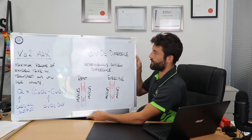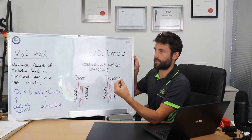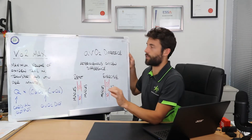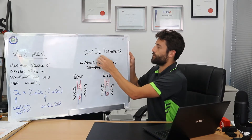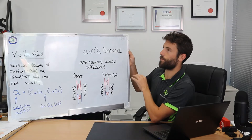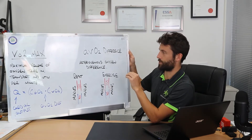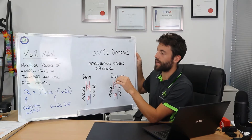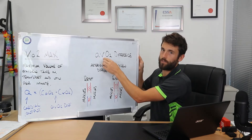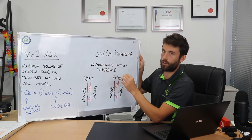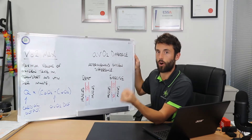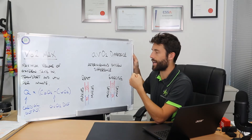The V in a-VO2 difference is completely different to the V in VO2 max. In VO2 max, V is volume. A-VO2 difference actually means arteriovenous — the arteriovenous oxygen difference. It might be easier to think of it as: A for arteries, V for veins, O2 for oxygen, D for difference — the difference in the concentration of oxygen in the arteries and in the veins.